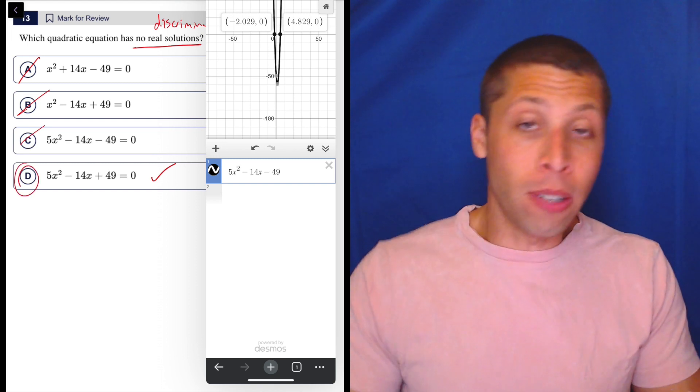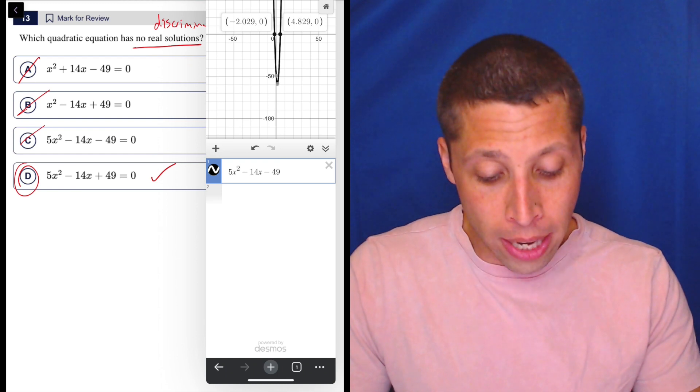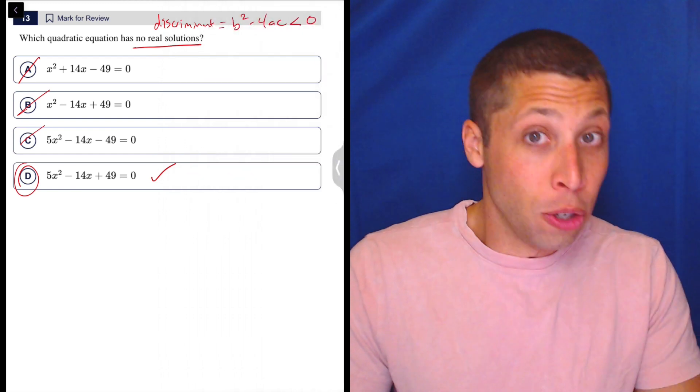Now the reason I wouldn't deal with the discriminant here is just like, why? Why risk it? I mean, I probably would do it right, but I could do it wrong.